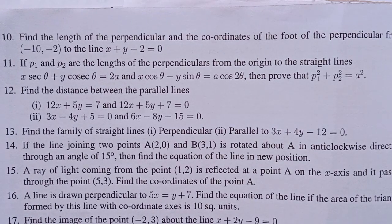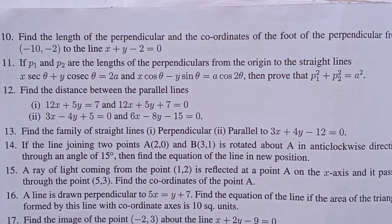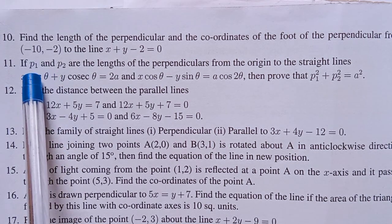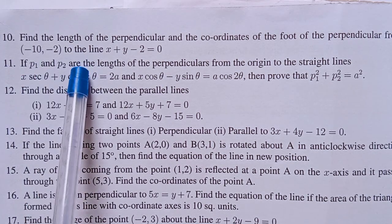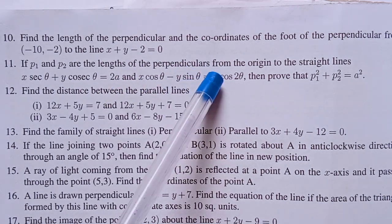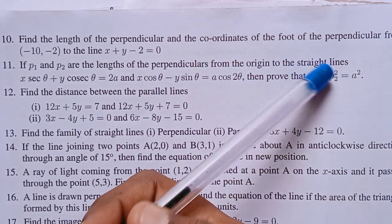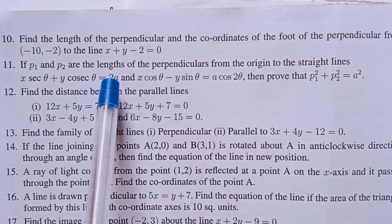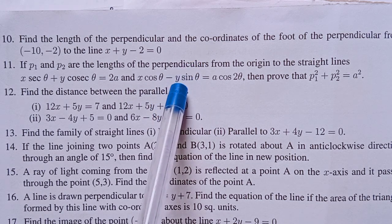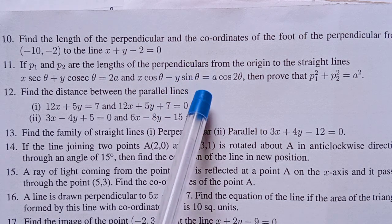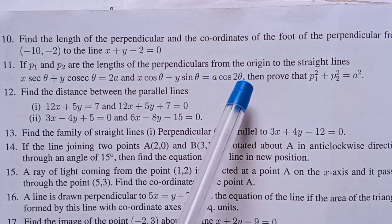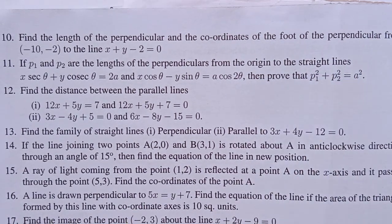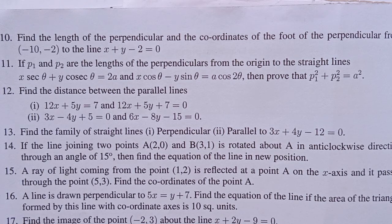Hi students, I am Vino. In 11th Maths Chapter 6, Exercise 6.3, Question 11: If P1 and P2 are the lengths of the perpendiculars from the origin to the straight lines X·secθ + Y·cosecθ = 2A and X·cosθ − Y·sinθ = A·cos2θ, then prove that P1² + P2² = A².